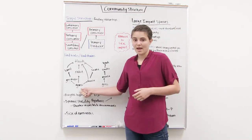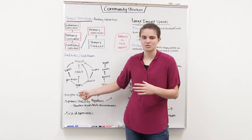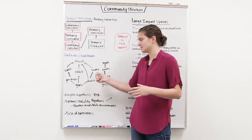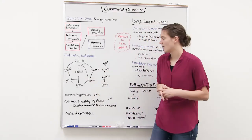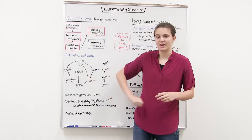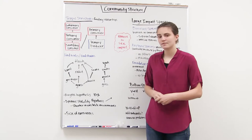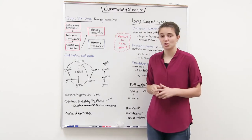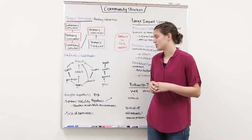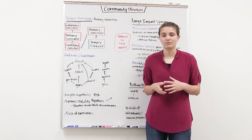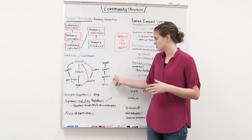One way we simplify food webs is by grouping similar species together. There are lots of different species of grass, mice, and snakes, but by grouping them together, we're able to simplify these food webs. Food chains and webs usually don't exceed more than four to seven trophic levels — typically staying around four to five interactions within a food chain.